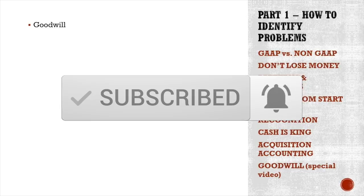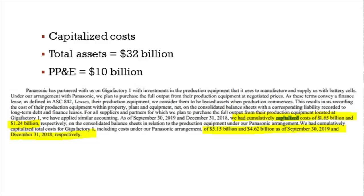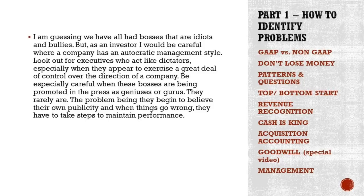Capitalized costs are another red flag. Going back to the car company: cumulatively capitalized costs — putting costs on the balance sheet as an asset — reached $5 billion against property, plant and equipment of only $10 billion. That's another oddity. I'm not implying anything, but you need to check how that trend plays out over the long term.